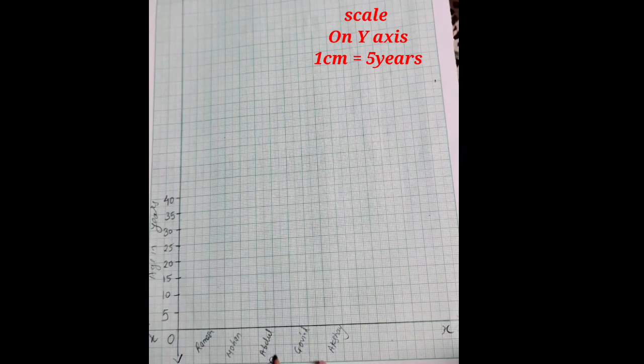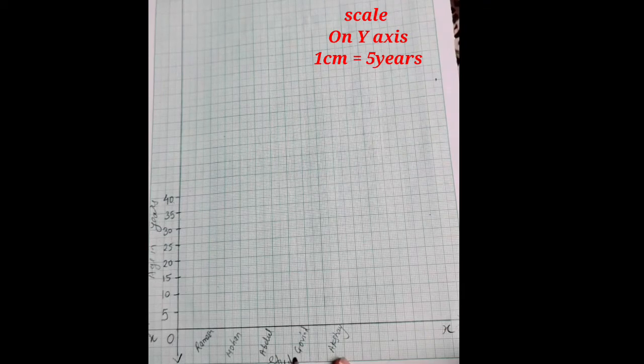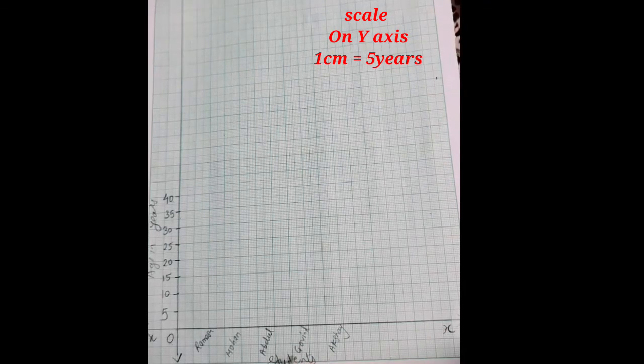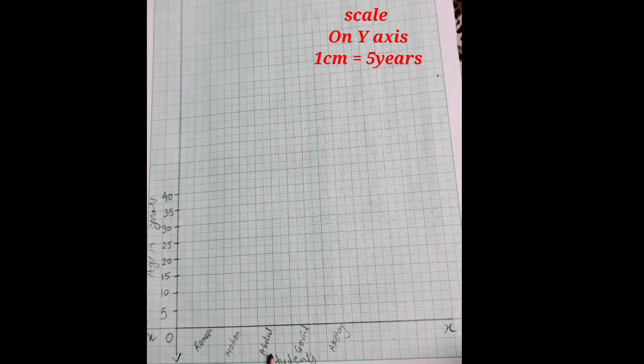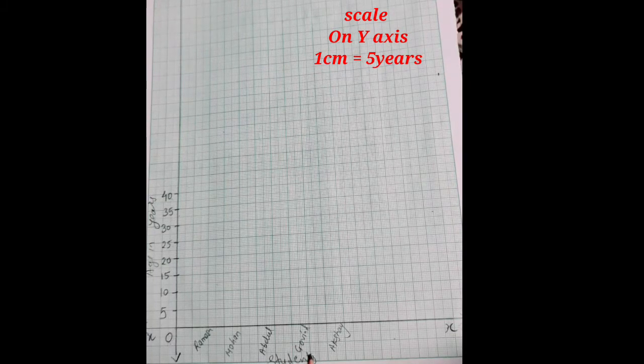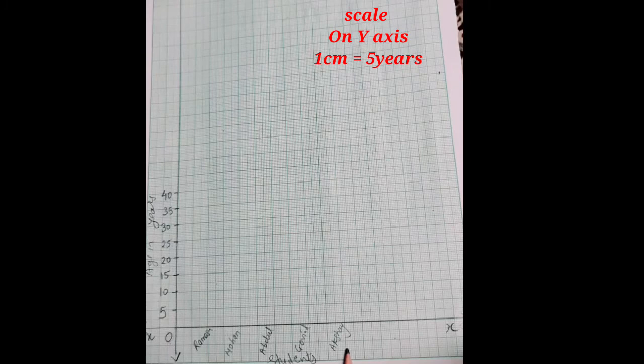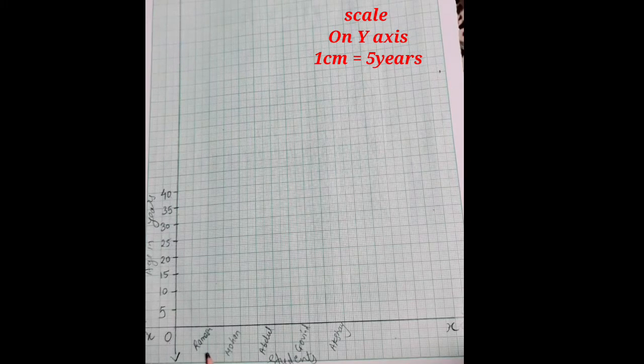Now here we will write the name of student. The 5 names are given here: Ramesh, Mohan, Abdul, Govind and Akshay.